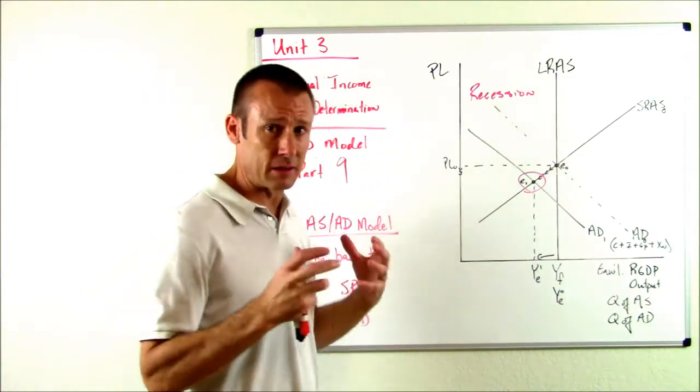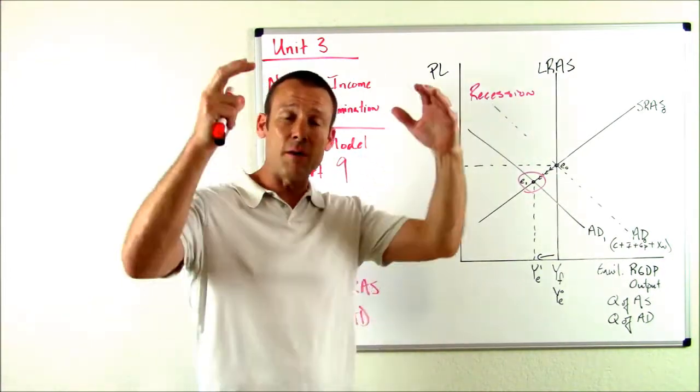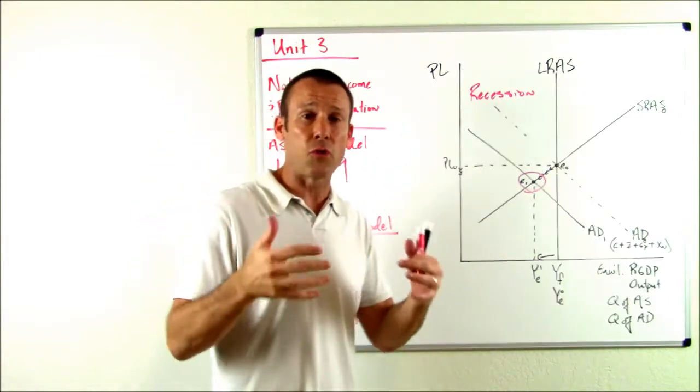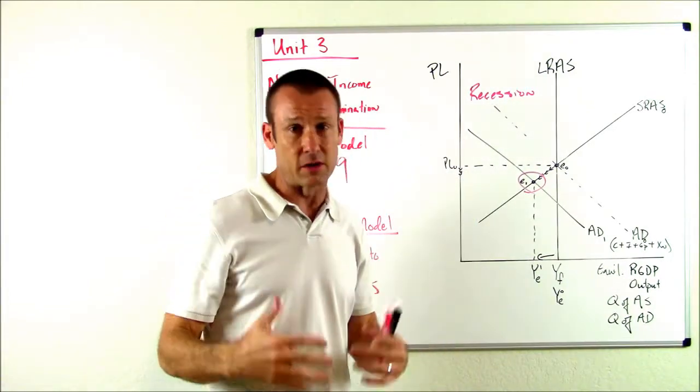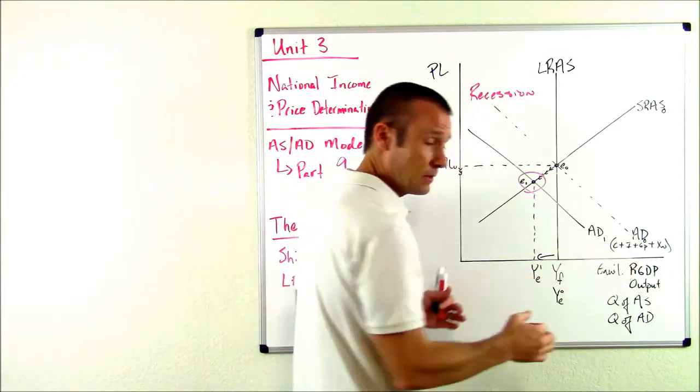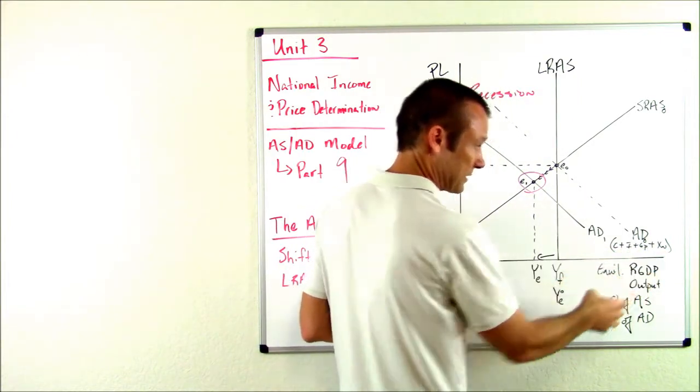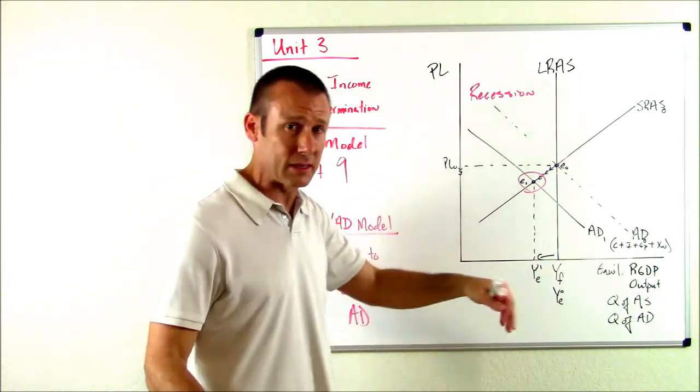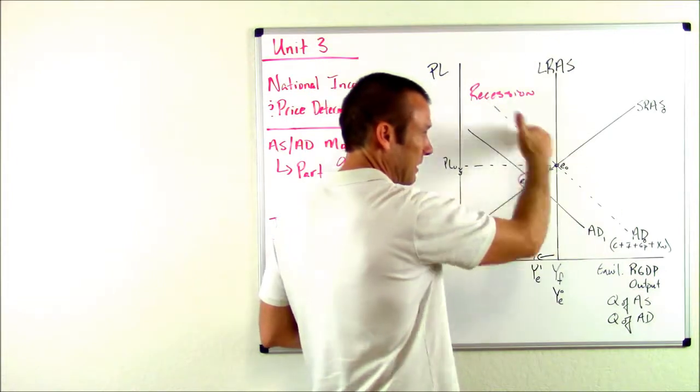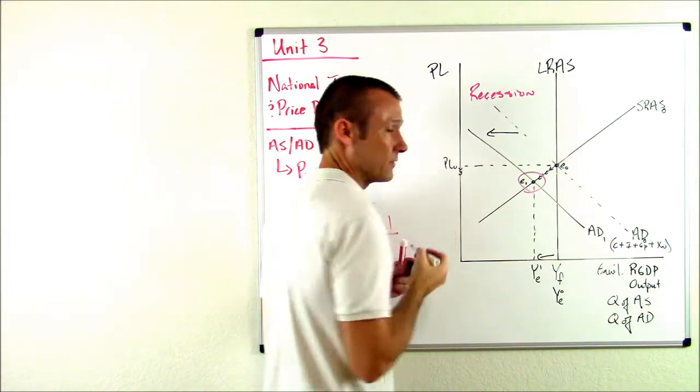Now, what happened in part eight, in that last video, is the stock market crashed. And when the stock market crashed, when stock prices came crashing down, the wealth of households came crashing down. And when households feel less wealthy, they cut back on their spending. And so knowing that AD, which is total spending, is C plus I plus G plus XN—C is household spending. Household spending is going to decrease. And when household spending decreases, AD, which you can see kind of a remnant of it where it was, shifted to the left. It decreased.